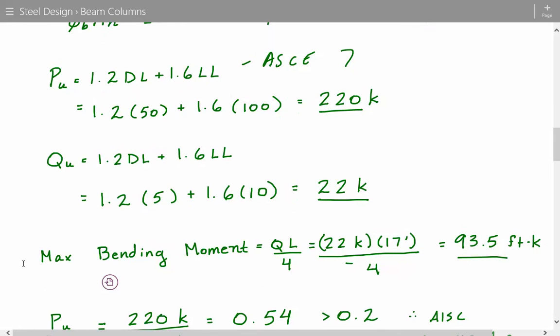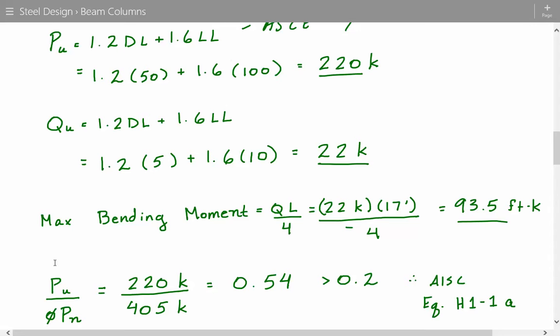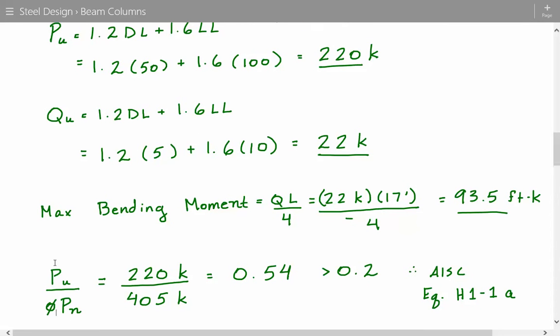And now we have to find which AISC equation we're supposed to use, which is going to be in chapter H of the AISC specification. So to do that, we have to take a look at the ratio of the factored axial load divided by the available strength, the axial compressive strength. So the factored load that we calculated was 220 kips.